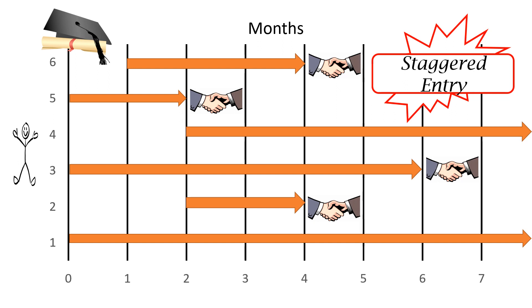A unique feature of survival analysis is what is called staggered entry. Staggered entry means that not all individuals need to begin at the exact same point in time when the study begins. For example, individuals could graduate at different times throughout the year from teachers college. Survival analysis is flexible in that it allows individuals coming in at different periods of time to all still be included within the analysis.